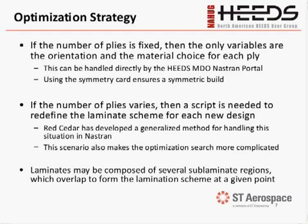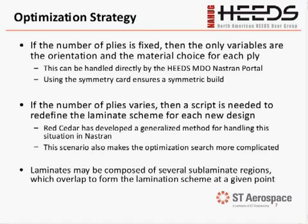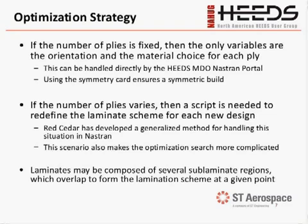To design composite parts with optimization, if the number of plies is fixed, it's pretty straightforward. We have a nice interface with the HEEDS Nastran portal which will directly modify the orientation and material choice for a given ply. We can account for manufacturability by using a symmetry card to ensure our final part is symmetric, and we can design for balancing by defining dependencies between our design variables.